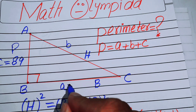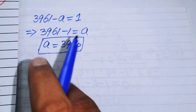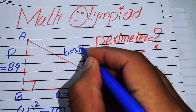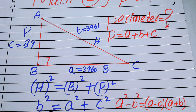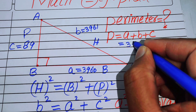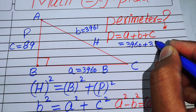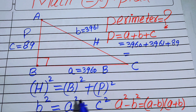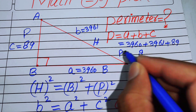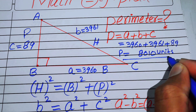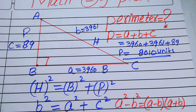Now we have all values: a = 3960, b = 3961, and c = 89. The perimeter is a + b + c = 3960 + 3961 + 89 = 8010 units. This is the final answer. Thank you so much for watching — please subscribe to the channel for more exciting videos.